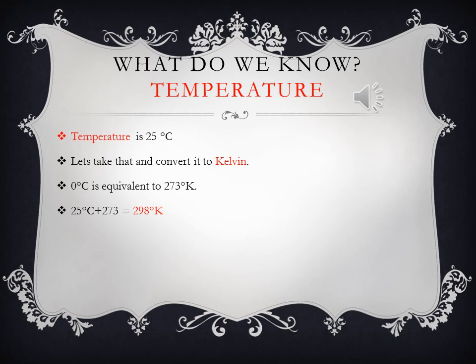Let's look at temperature. Temperature was given to us at 25 degrees Celsius. In order to use the equation, we need to convert it to degrees Kelvin. That is really simple to do. 0 degrees Celsius is equivalent to 273 degrees Kelvin. If we take 25 degrees Celsius and add 273, we get 298 degrees Kelvin.